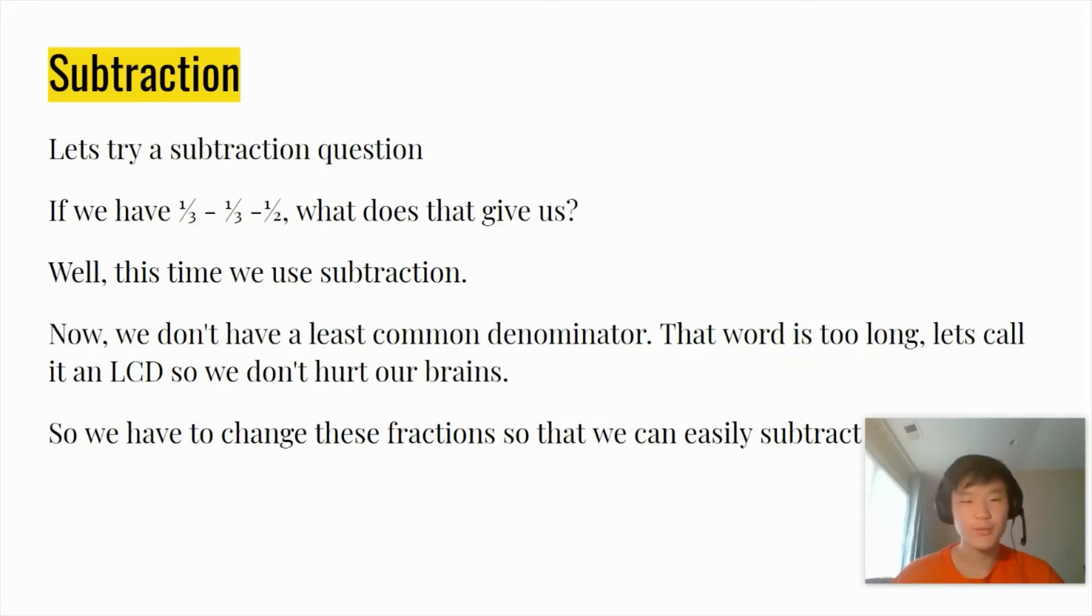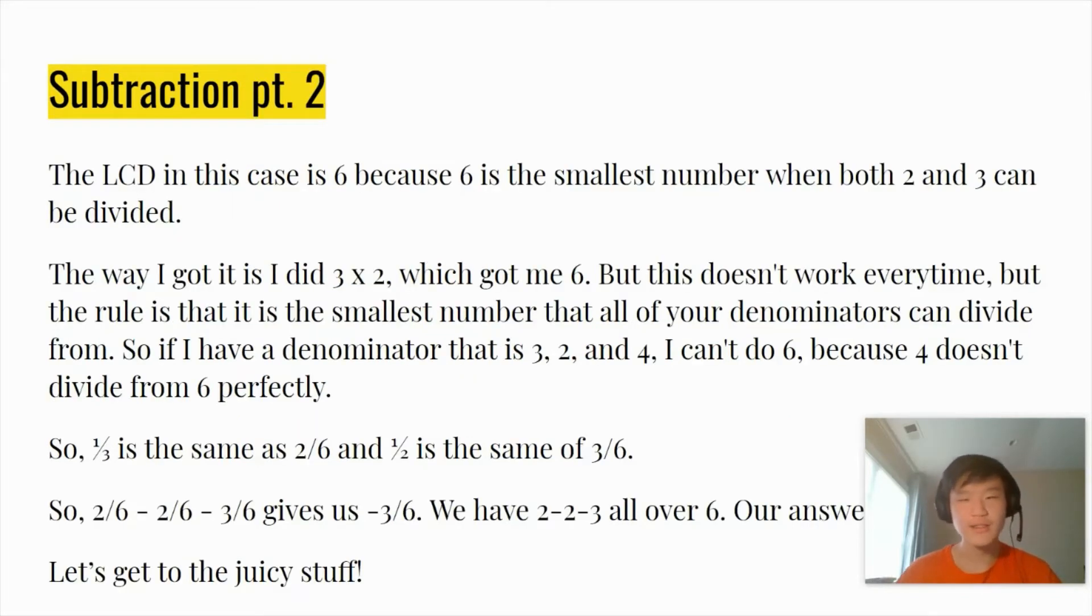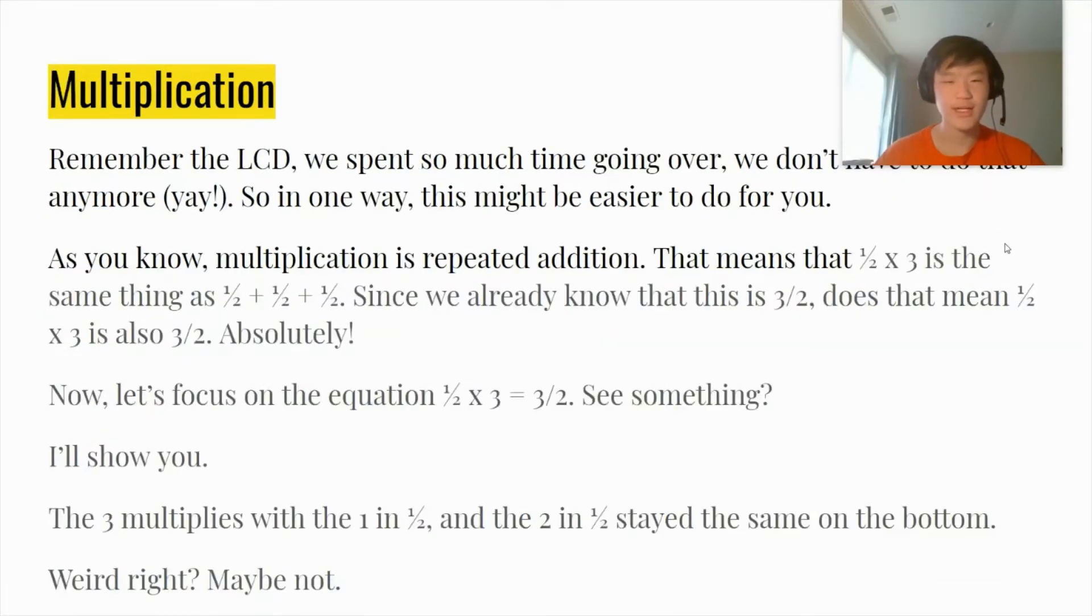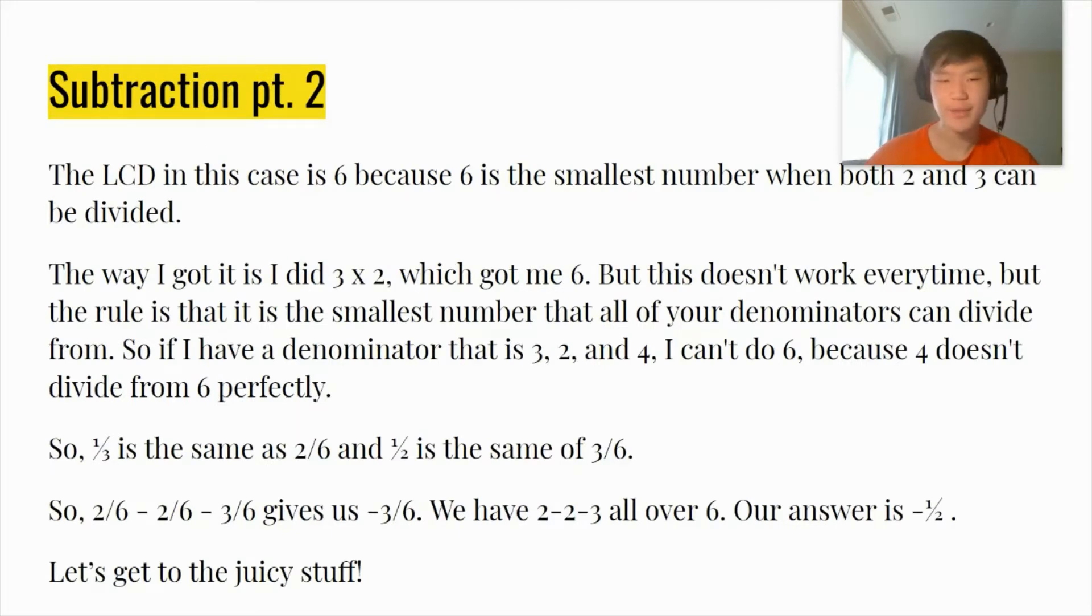Let's try a subtraction question. If we have 1/3 - 1/3 - 1/2, what does that give us? Well this time we use subtraction. Now we don't have a least common denominator, that word is too long. Let's call it LCD so we don't hurt our brains. So we have to change the fractions so we can easily subtract them. The LCD in this case is 6 because 6 is the smallest number where both 2 and 3 can be divided. The way I got it is I did 3 times 2 which got me 6. But this doesn't work every time because the rule is that the smallest number that all your denominators can divide from. So if I have a denominator that is 3, 2, and 4, I can't do 6 because 4 doesn't divide perfectly from 6. So 1/3 is the same as 2/6 and 1/2 is the same as 3/6. So 2/6 - 2/6 - 3/6 gives us negative 3/6. We have 2 - 2 - 3 all over 6 and our answer will be negative 1/2.